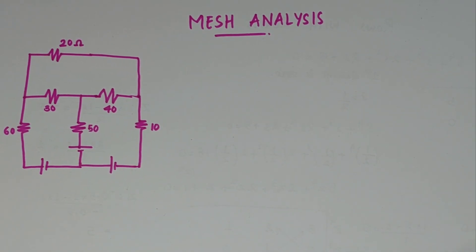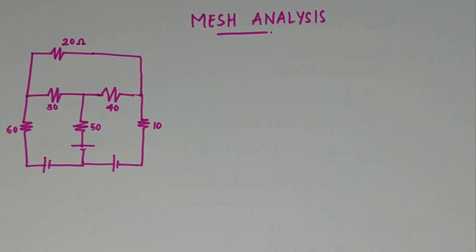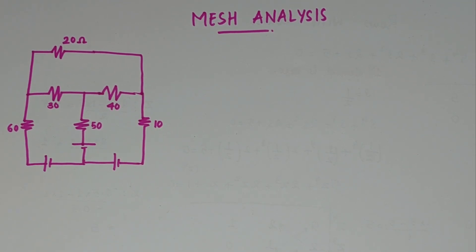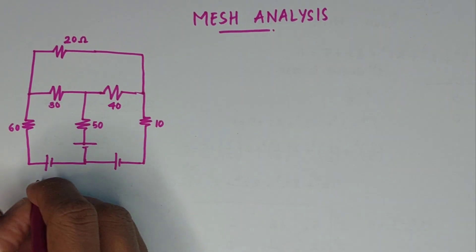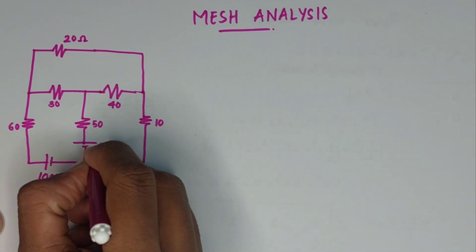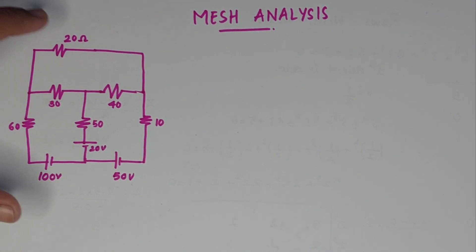Today we will be discussing mesh analysis. Mesh analysis is based on KVL, which is called Kirchhoff's Voltage Law. If we apply it to the circuit, we analyze it and assign mesh currents. In this question we have voltage sources: 100V, 50V, and 20V.